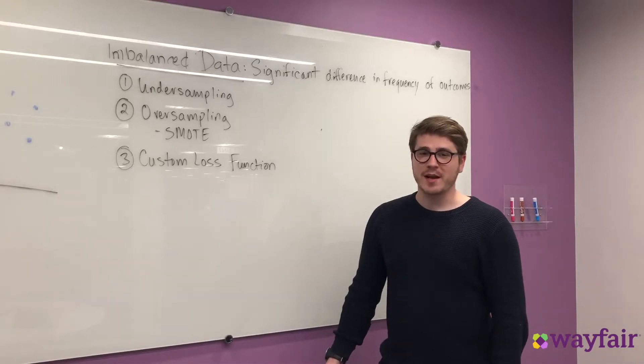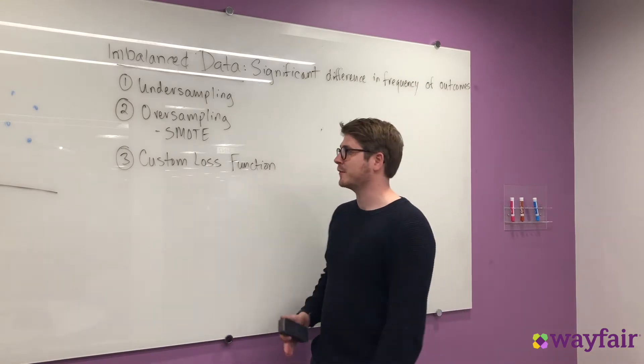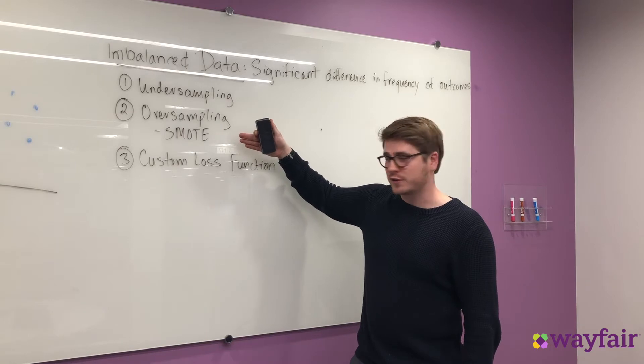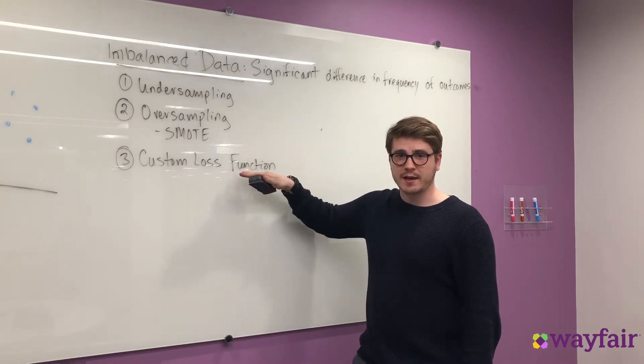So what are the specific ways we can handle imbalanced data? There are three common techniques for this. These are undersampling, oversampling, an example of which is SMOTE, and defining a custom loss function.